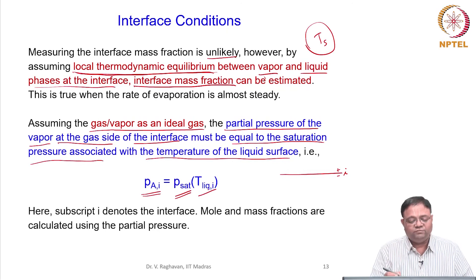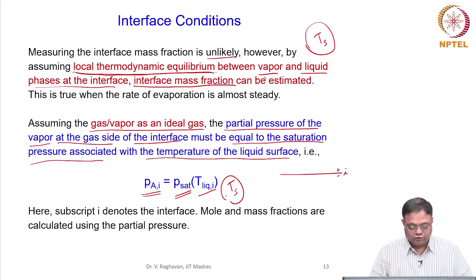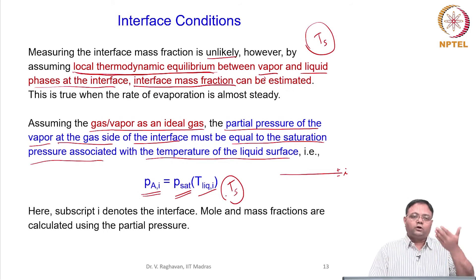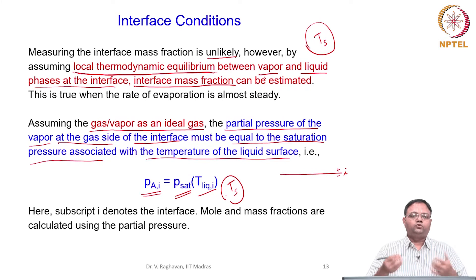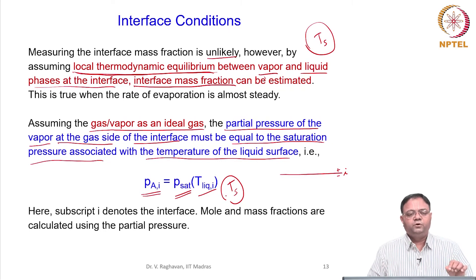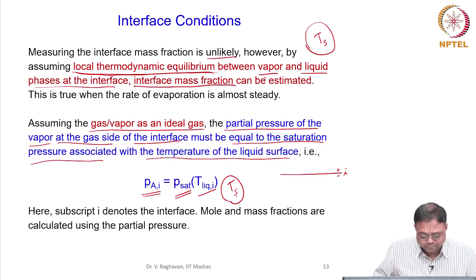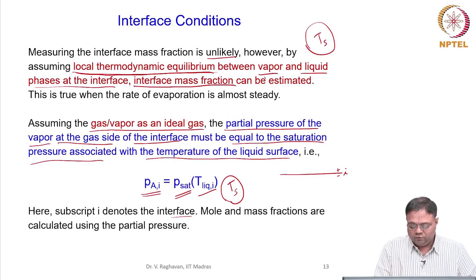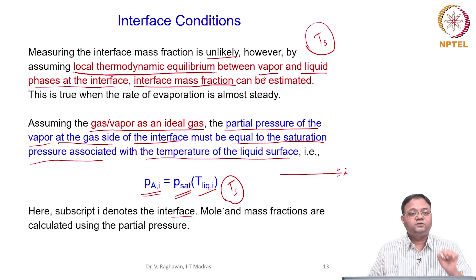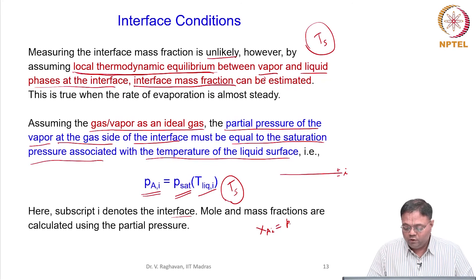Given T_s as the interface temperature, there is a particular saturation pressure, which is taken as the partial pressure of species A at the interface. The interface is designated with a liquid-side temperature T_liquid_i, which equals the gas-side temperature — continuity of temperature at the interface is required. Therefore, the mole fraction X_AI equals P_AI divided by the total pressure.